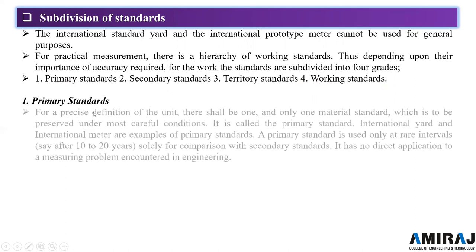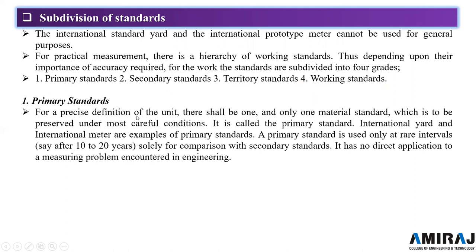The first is the primary standard. For a precise definition of a unit, there shall be one and only one material standard, preserved under the most careful conditions. The international yard and international meter are examples. A primary standard is used only at rare intervals, say after 10 to 20 years, solely for comparing with secondary standards. It has no direct application to measuring problems in engineering.